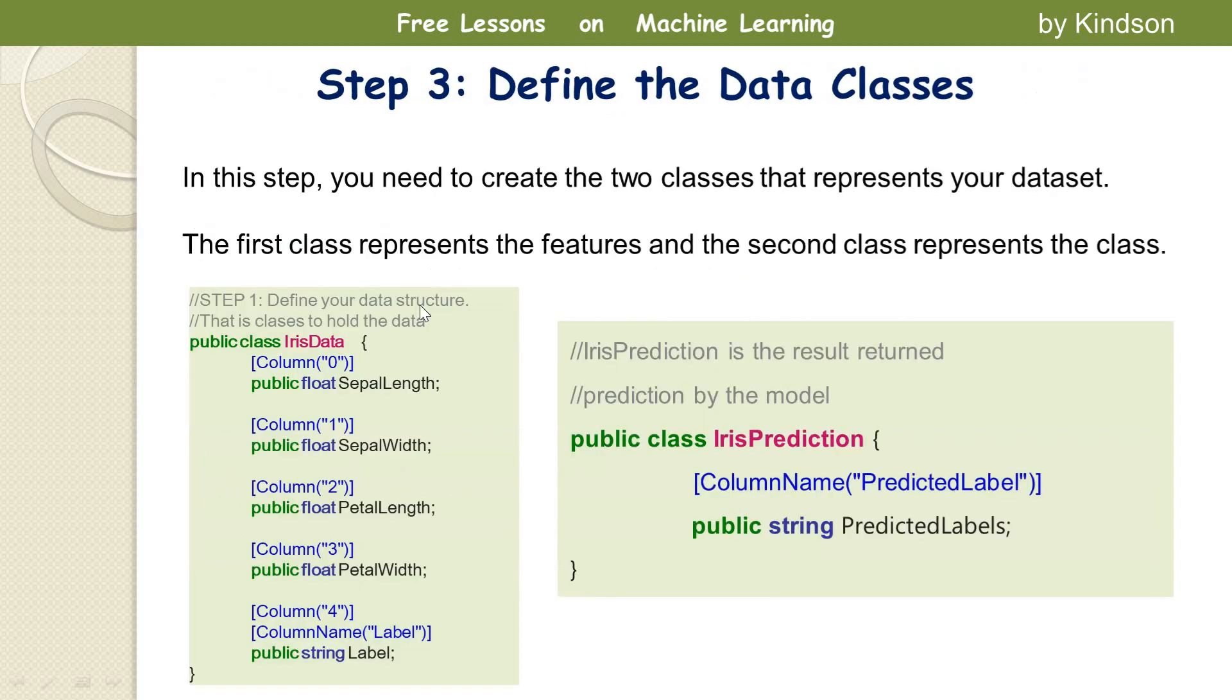The first class will map to the datasets, so it has all the attributes that correspond to the features attribute of the dataset. The second class will have just one column representing the category or the class the particular object belongs.